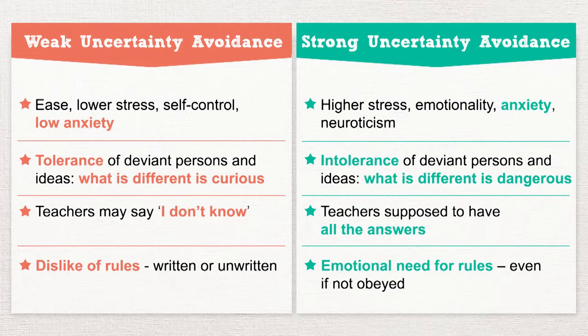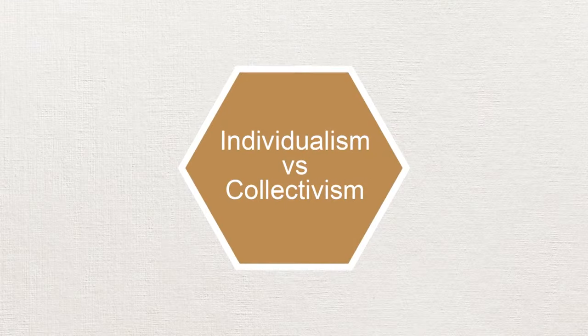It provides a framework for understanding how people might feel uncomfortable or comfortable in unstructured situations. Here are the differences between weak uncertainty avoidance and strong uncertainty avoidance provided by Hofstede. Individualism versus collectivism looks at two elements. Individualism suggests individuals are expected to take care of only themselves and their immediate families. Collectivism suggests individuals can expect their relatives or members of a particular in-group to look after them in exchange for unquestioning loyalty.